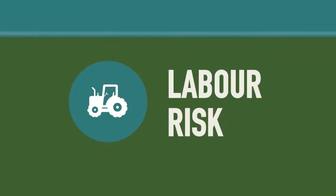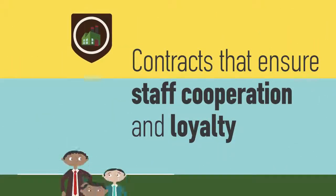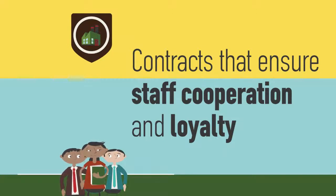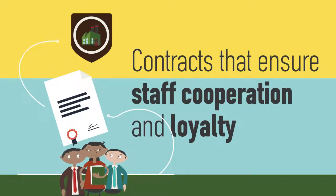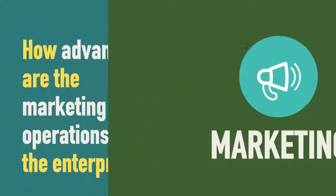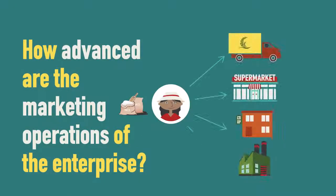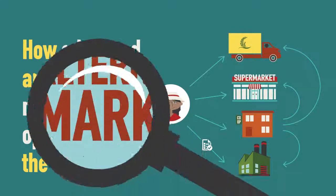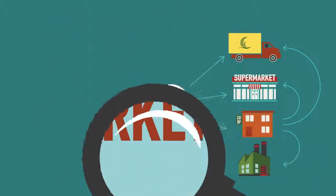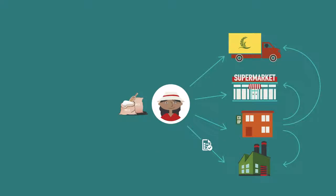Whether they have a long-term history and appropriate contracts in place to protect them if the supplier fails to deliver. Labor Risk: the relationship between the enterprise and its staff, and whether the staff are contracted in a way that ensures their cooperation and loyalty. Marketing: how advanced are the marketing operations of the enterprise, and how difficult is it for them to find alternative markets should existing clients remove their business?